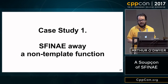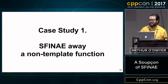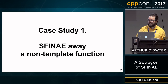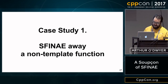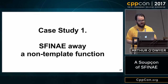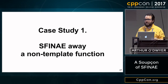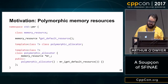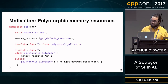Let's talk about some case studies. Case study number one: SFINAE away a function that is not currently a template. The motivation is C++17's new header memory_resource with std::pmr, which has memory_resource — a classically polymorphic interface to an allocator — and polymorphic_allocator which has a pointer to a memory resource and a default constructor that gets the default resource.